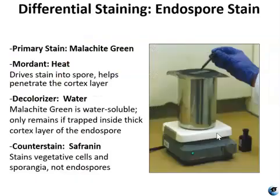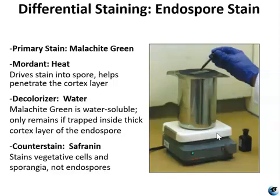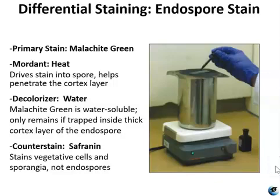The procedure is called the Schaefer-Fulton method, the most commonly used endospore staining technique. Very similarly to the acid-fast stain, it uses heat to push the primary stain — malachite green — into the endospore. The heat helps malachite green penetrate the cortex layer, and the decolorizer is water. Because malachite green is water-soluble, water removes it from sporangia and vegetative cells, leaving it only trapped inside the thick cortex of the endospore. Safranin is the counterstain and stains vegetative cells and sporangia, but not the endospores.